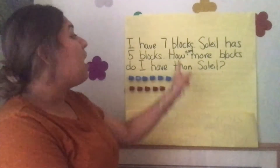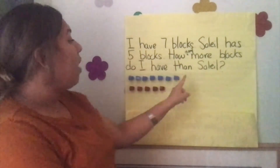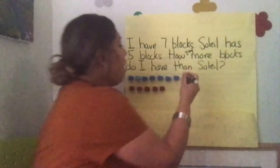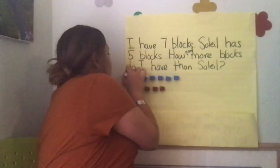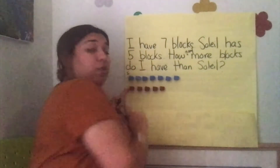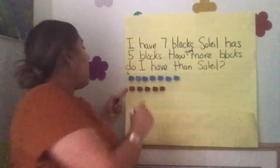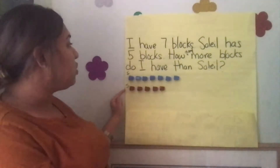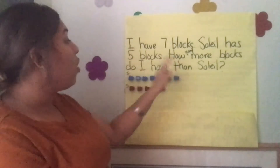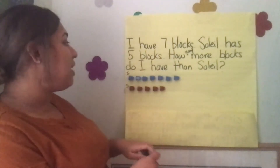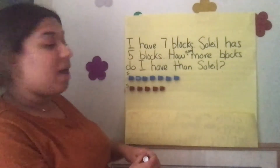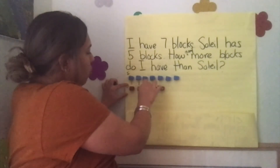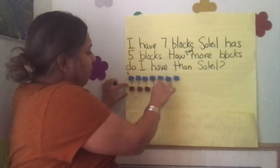Now we're trying to think about what we're trying to find out. The question is asking us: how many more blocks do I have than Soleil? So just to not confuse myself, I'm going to write an I here for myself and an S for Soleil. This is the amount I have, this is the amount that Soleil has. I want to know how many more do I have than Soleil, so we're going to compare. We both have one, two, three, four, five.